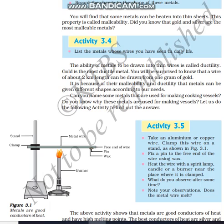Gold is the most ductile metal because we can convert gold metal into wires easily. We will be surprised to know that a wire of about 2 km length can be drawn from just 1 gram of gold — only 1 gram of gold can produce a 2 km long wire. So metals exhibit the property of ductility. It is because of their malleability and ductility that metals can be given different shapes according to our needs.